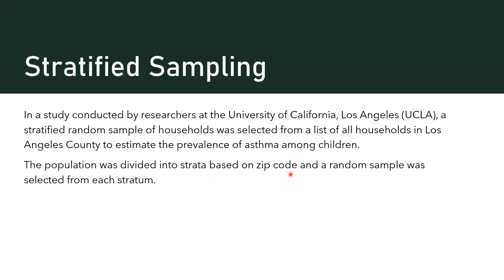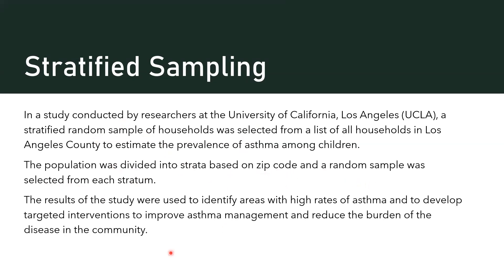Here's a use case: UCLA did a study using a stratified random sample of households to study the prevalence of asthma among children. The way they stratified it was based on zip code — people in the same zip code share a geographical location, which could mean similar air quality and water quality. A random sample was selected from each stratum, and the results were used to identify areas with high rates of asthma and target them for prevention and intervention.